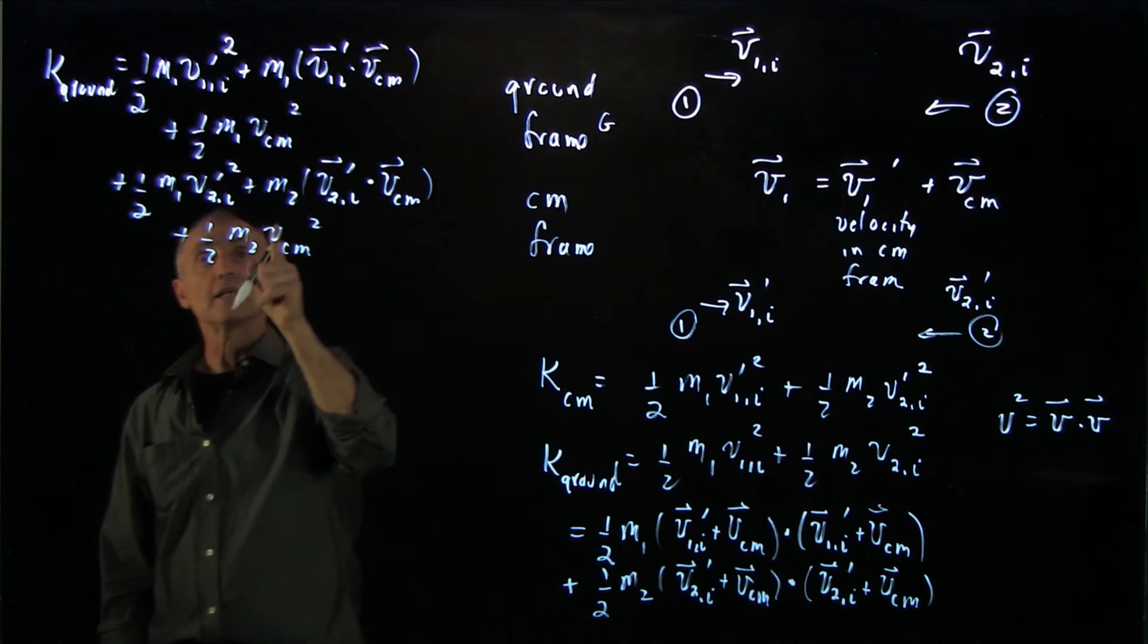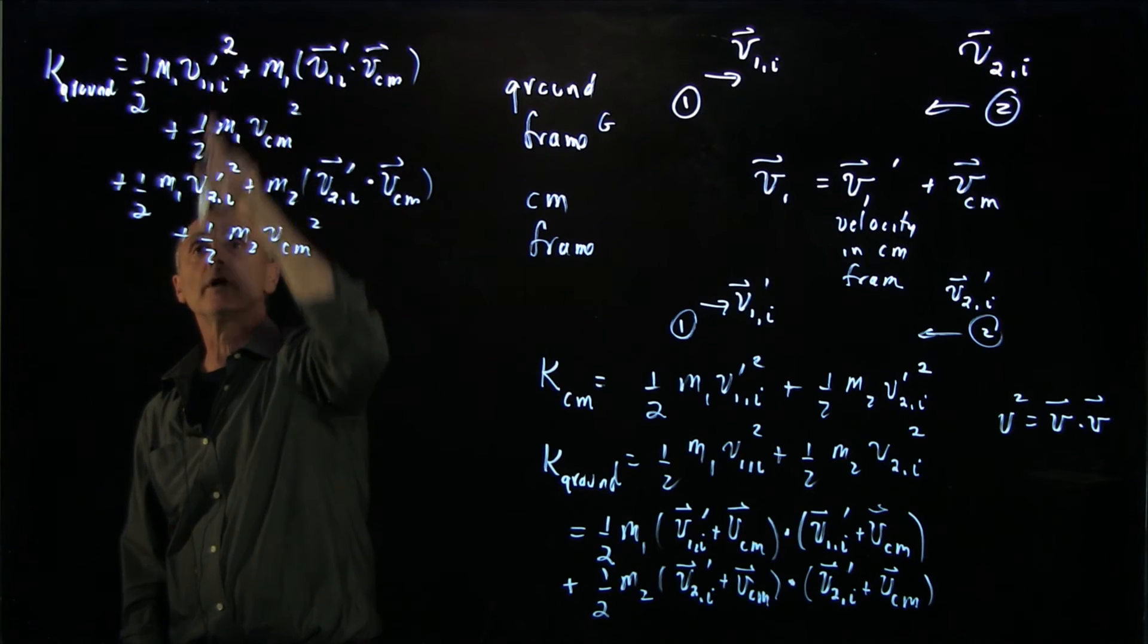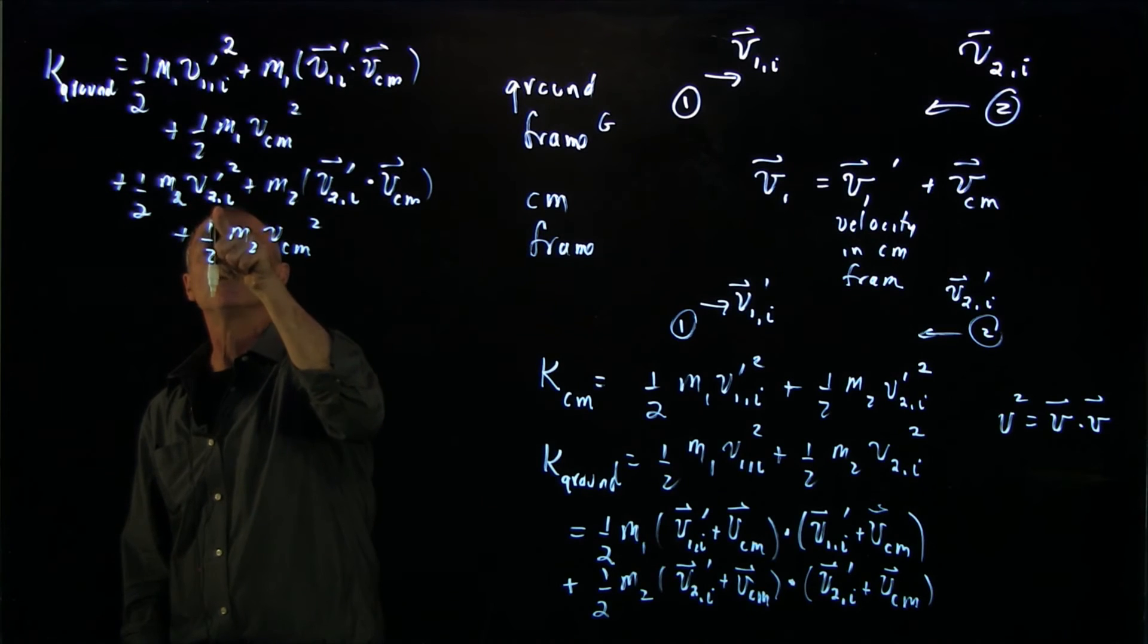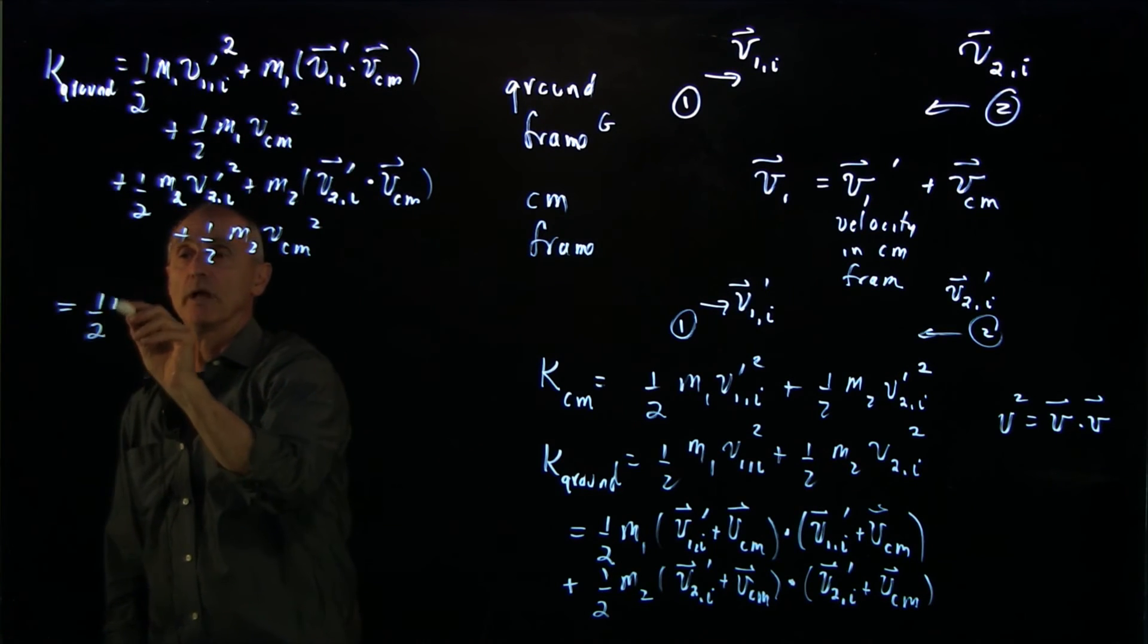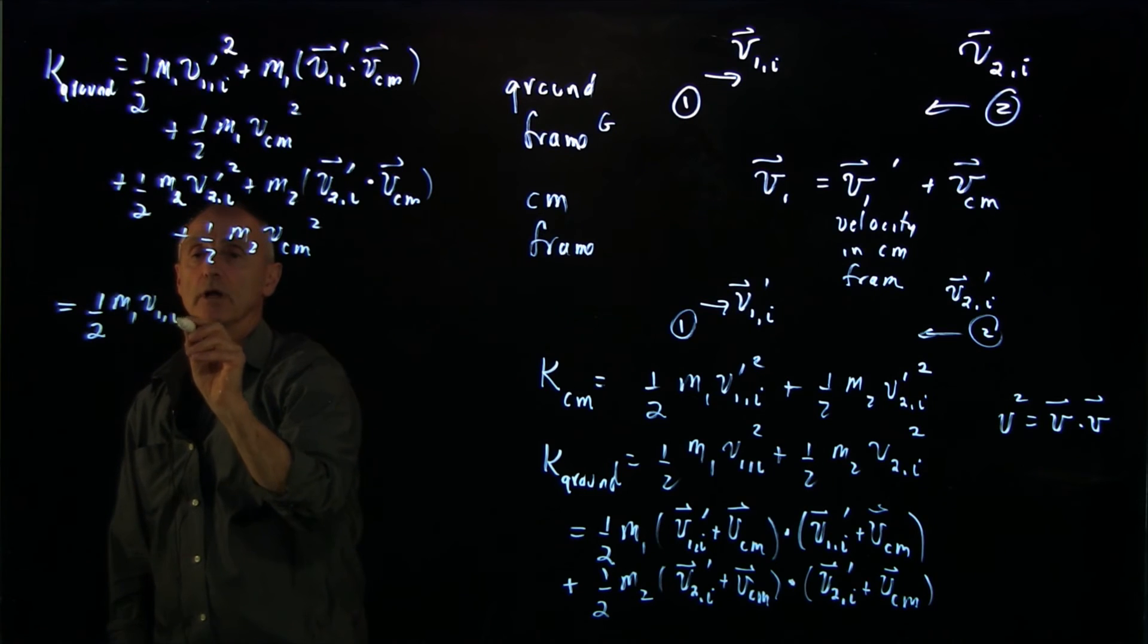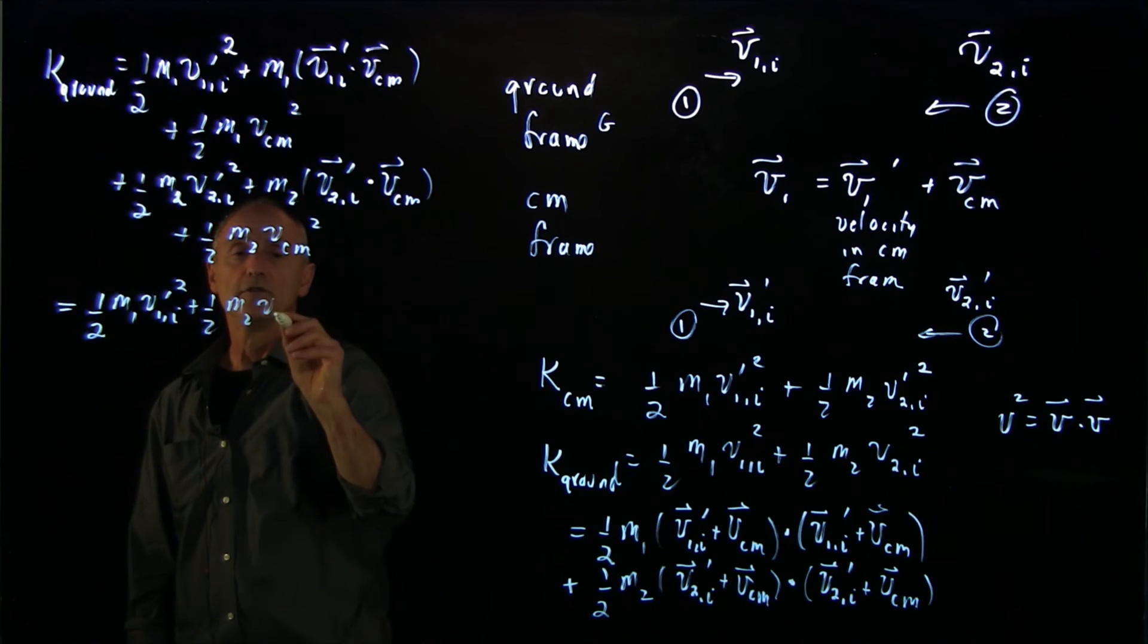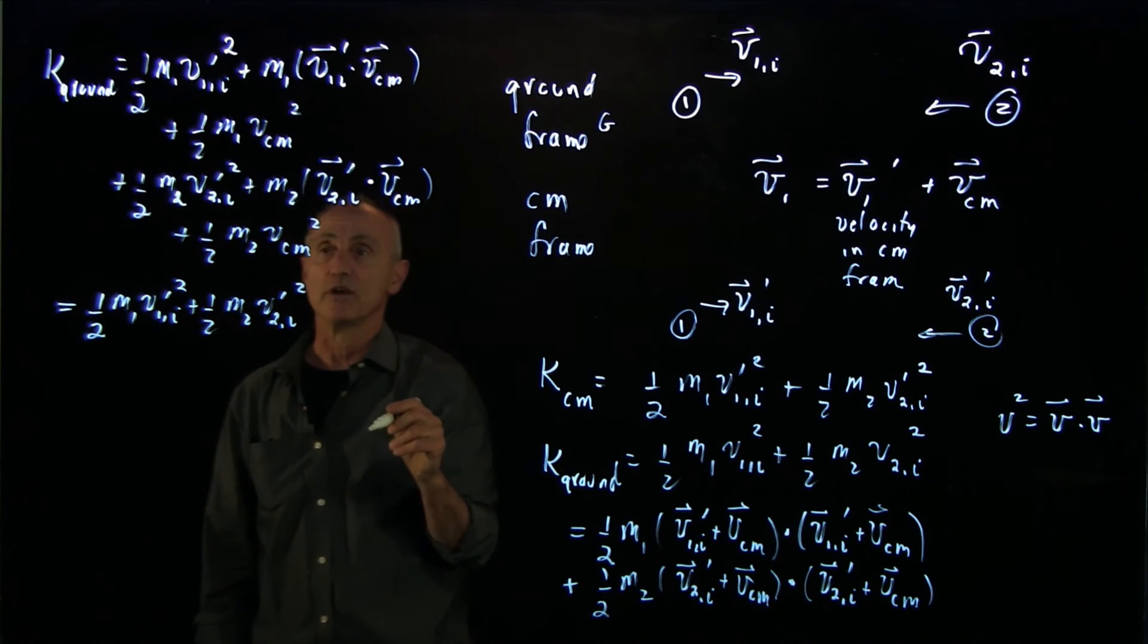Now let's look carefully what we have. We have 1 half m1 v1 prime squared, this is m2, 1 half m2 v2i prime squared. So we have 1 half m1 v1i prime squared, plus 1 half m2 v2i prime squared. And you're already noticing that's the kinetic energy in the center of mass frame.